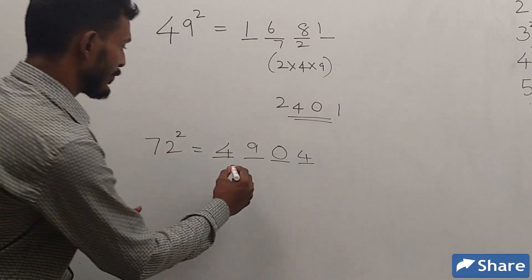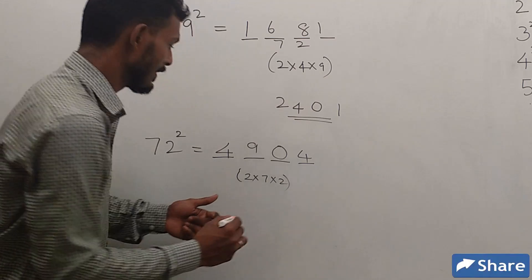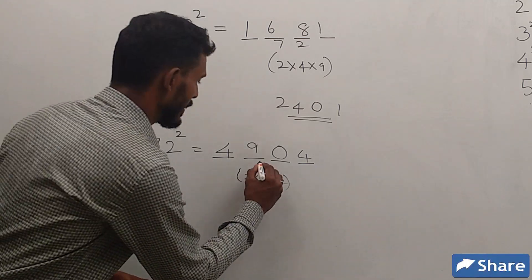Then, 2 × 7 × 2, that is, 4 × 7, which is 28.